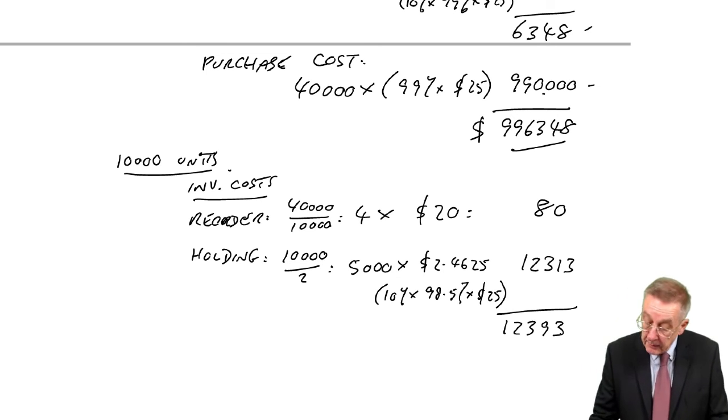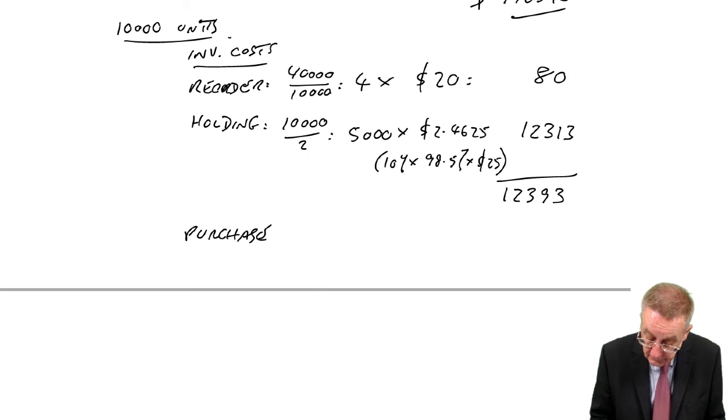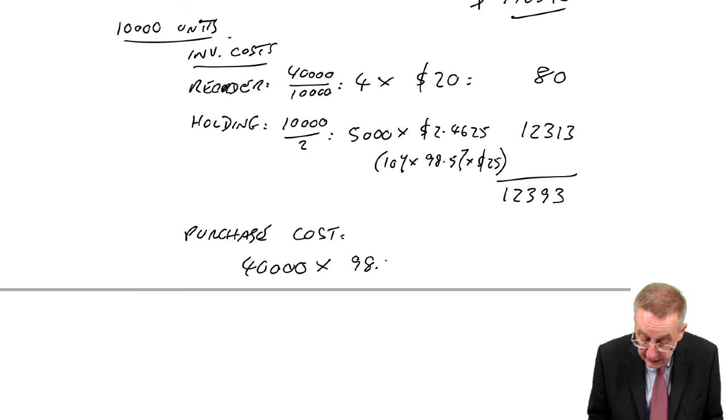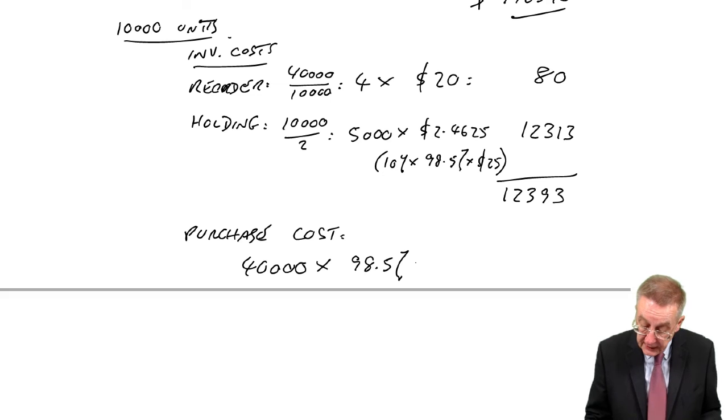But again, it could be worth it because the purchase cost is going to be lower. We still need 40,000 units. The cost now, after a 1.5% discount, the cost is 98.5% of $25.